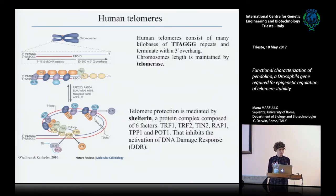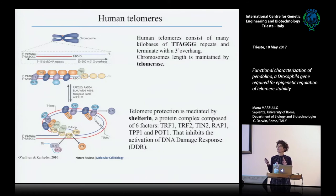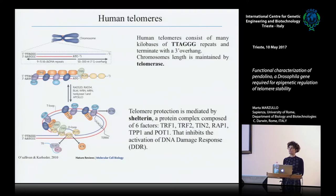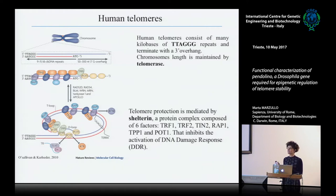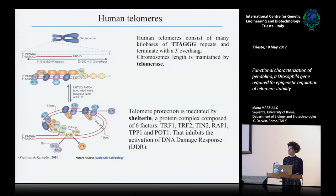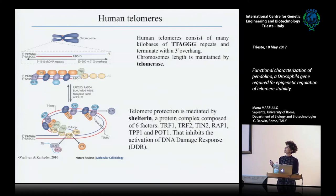As you know, telomeres are chromosome ends and they serve two main functions. On one hand, they counteract chromosome shortening due to the inability of the DNA polymerase to synthesize DNA in a 3'-to-5' direction. On the other hand, they protect chromosome ends against wrong recognition as double-strand breaks and against the activation of the DNA damage response, a process known as telomere capping.